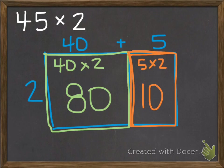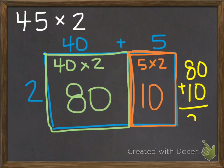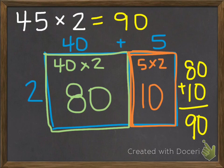So all I need to do is add up these products here. 80 plus 10. And I know that's 90. So the answer to 45 times 2 is 90.